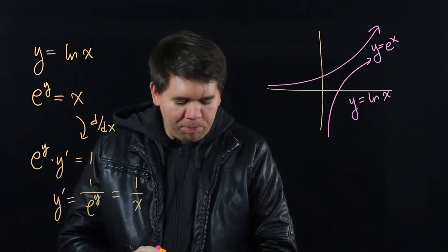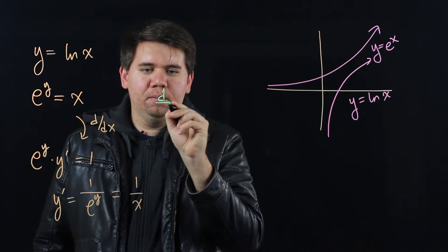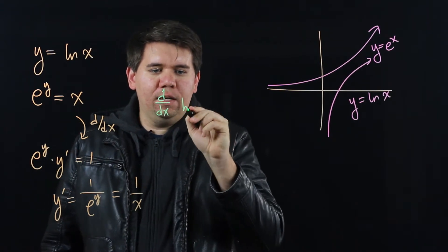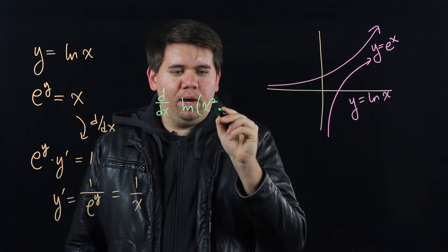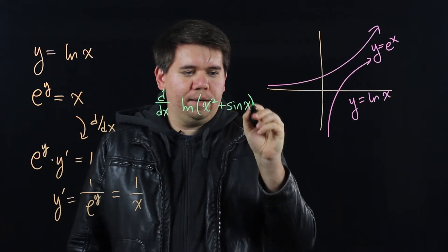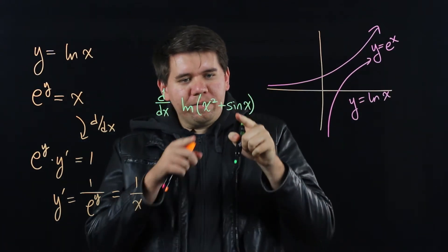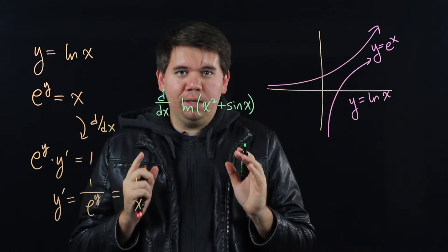Let's see an example of this in action. Suppose you want to calculate the derivative of the natural log of some function like, say, x squared plus sine of x. Well, since we have a function inside of a function, we're going to have to use the chain rule.